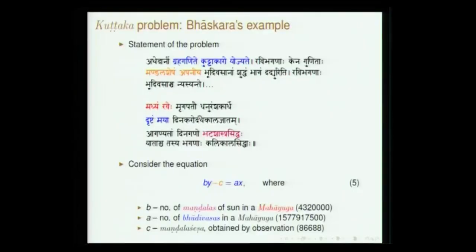Bhaskara says: Bhutivasa is the number of civil days — the number of sunrises in a given period. When sun or moon starts moving, it may start at a particular point, make n revolutions, and when it comes back it need not be the same time. Can we fix a period by which it completes integral revolutions alongside other bodies? He says: Madhyam Ravehe Mrikapato Dhanuram Shakardhe — Denakarodaya Kalajatam means when it rises. Aganyatam Denaganaha Bhatashastra Siddha — this Bhatashastra refers to Aryabhata's shastra.